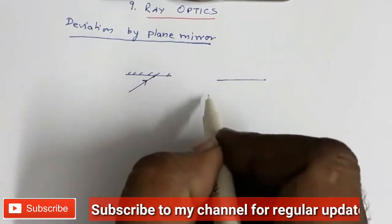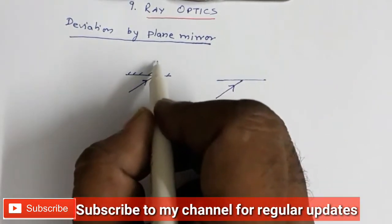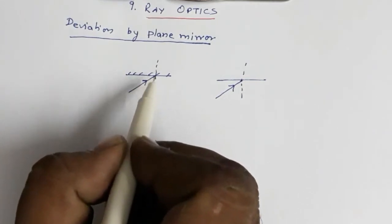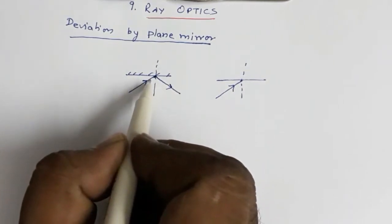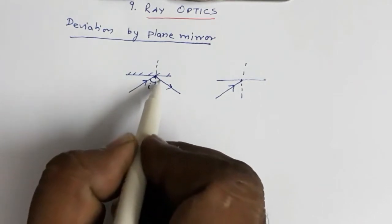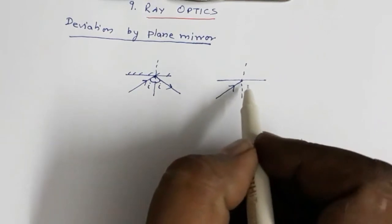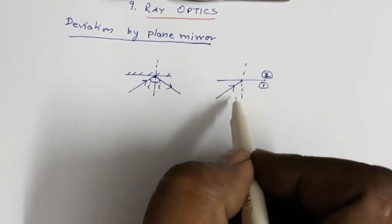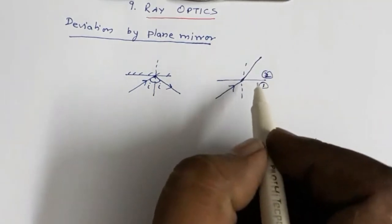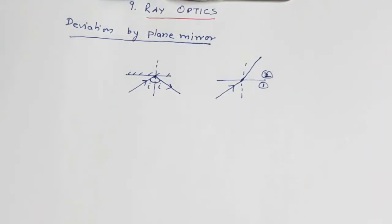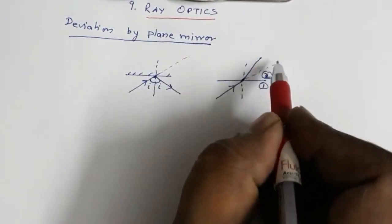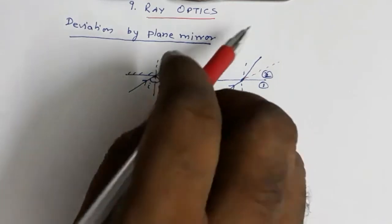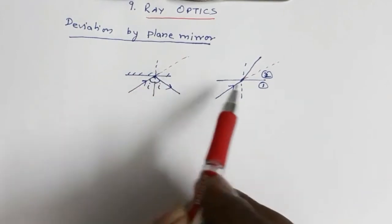Suppose this is the direction of the incident ray and this is the normal at the point of incidence. In the case of a plane mirror, because of reflection at this point, the ray gets turned back at the same angle. If this angle is I, this angle is also I. Now, suppose the ray is travelling from the first medium to the second medium — this is a rarer medium, this is a denser medium. Then, if the ray is travelling from rarer to denser medium, it will bend towards the normal. In both cases, this is the actual direction of the ray. So, deviation means the ray gets turned due to the presence of a mirror or a refractive medium.